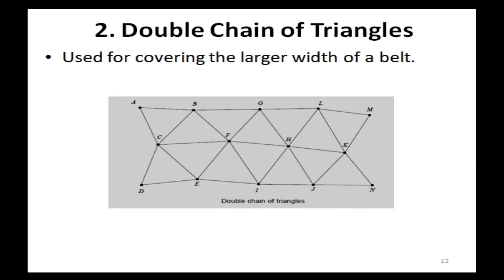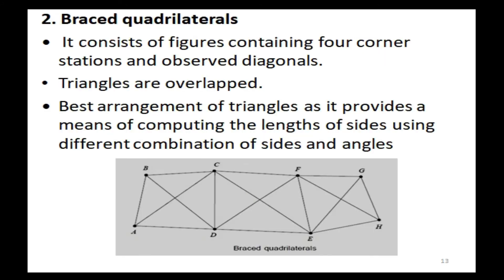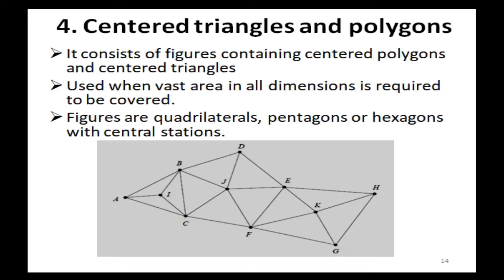Double chain of triangles is used for covering a larger width of a belt. Braced quadrilateral is considered the best arrangement of triangles as it provides a means of computing the lengths of sides using different combinations of sides and angles. Centered triangles and polygons consist of figures containing centered polygons and centered triangles, used when a vast area in all dimensions is required to be covered. Figures may be quadrilaterals, pentagons, or hexagons with central stations.